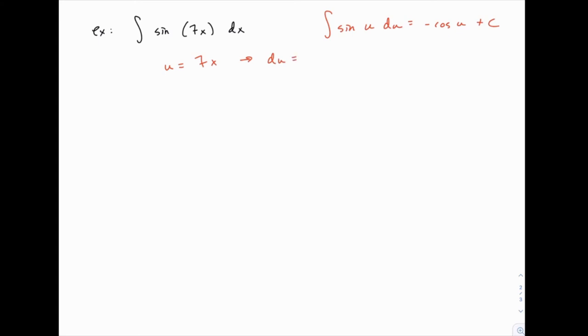That's the other half of our substitution. We have to replace all the x's, but also we have to replace dx. So the du you find by differentiating u, so the derivative of 7x is 7, and then you tag on dx.